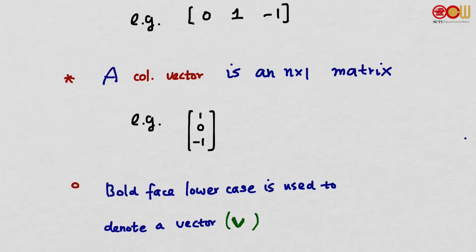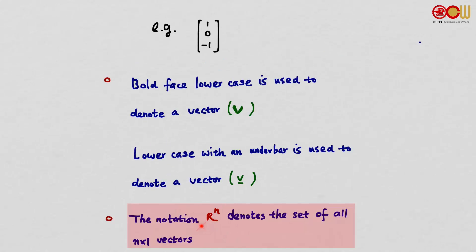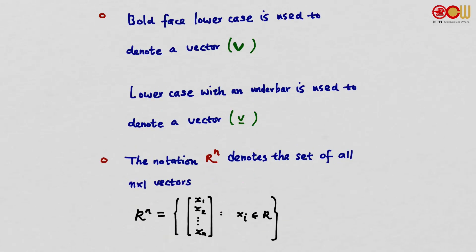It's more difficult for me to draw thick letters here, so I will use a different notation instead. What we will use here is a lowercase letter with an underbar to denote a vector — v with an underbar. One more notation: R^n will denote the set of all n by 1 vectors. We can write R^n as the collection of all n by 1 vectors with entries x_1 to x_n, where each x_i is in R.